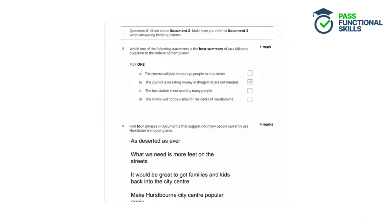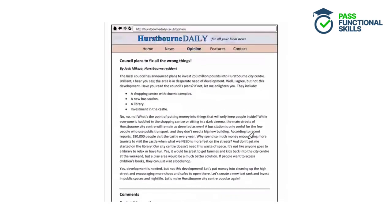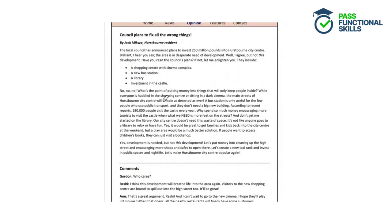Question 8: Which one of the following statements is the best summary of Jack Mixture's objection to the redevelopment plans? Tick one. We have to choose one statement that best summarises Jack's objection — his reasons for disagreeing with the plans. The options are: the cinema will just encourage people to stay inside; the council is investing money in things that are not needed; the bus station is not used by many people; or the library will not be useful for residents of Hurstbourne.